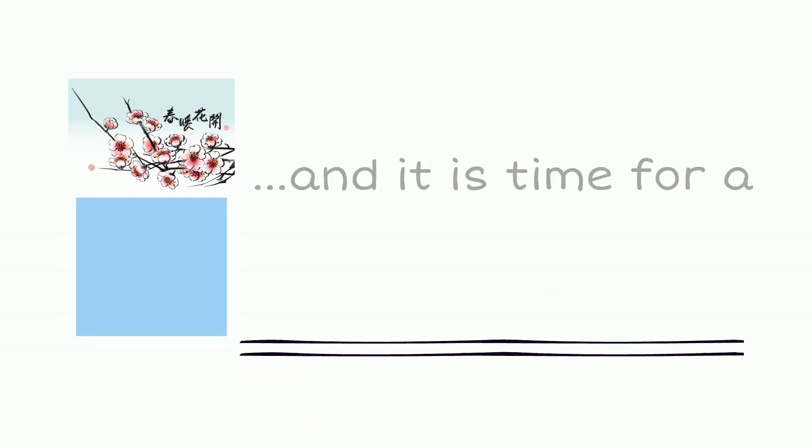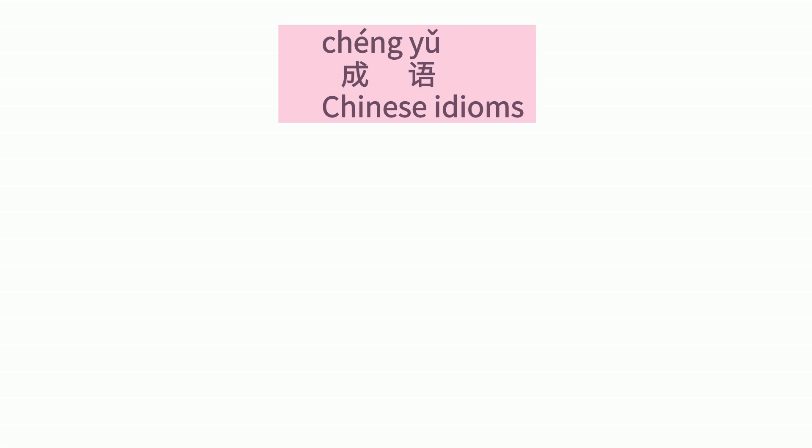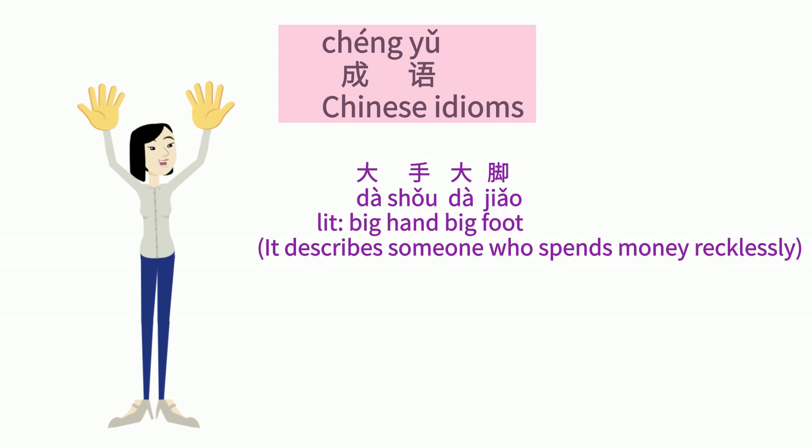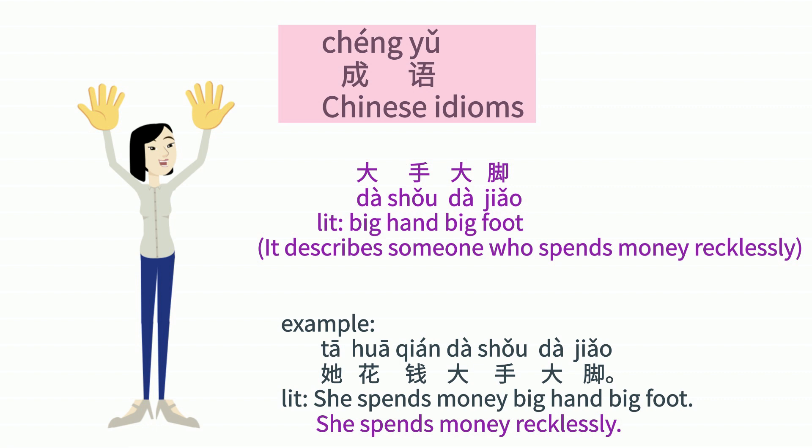Now it's time for a language tip. You might have heard about 成语 — Chinese idioms. There is a good idiom to describe a big spender: 大手大脚, literally 'big hand, big foot.' This idiom is mostly used to describe a person spending money without restraint. For example: 他花钱大手大脚 — literally 'she spends money big hand, big foot,' meaning she spends money recklessly.